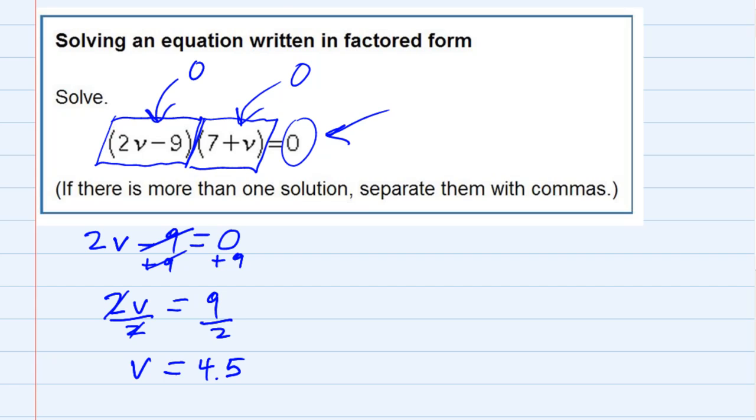Then the other possibility is, there's two terms being multiplied that equals zero, so maybe this one is the one that equals zero. So I could say, or, 7 plus v equals zero.